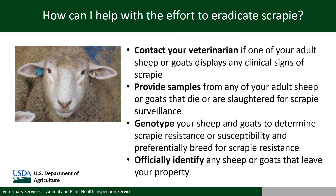Finally, while there are federal exceptions to the requirements for official individual identification in sheep and goats, officially identifying sheep or goats that leave your property is one of the most important things that you can do to ensure the ability of veterinary services to help mitigate the impact of scrapie and foreign diseases on the sheep and goat industry in the event of a positive case.